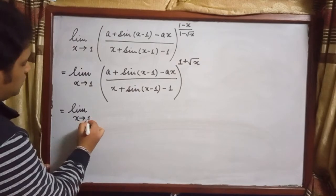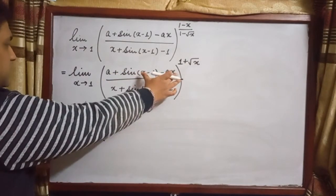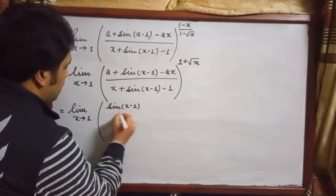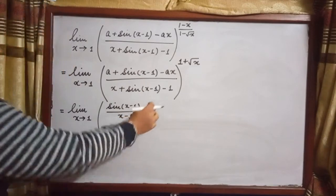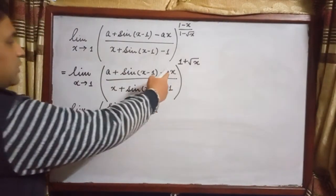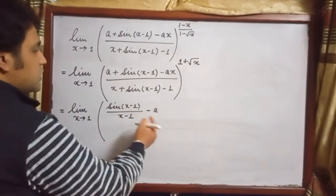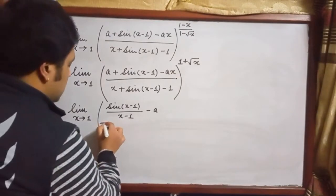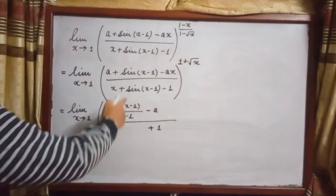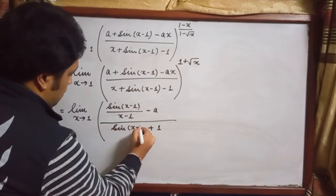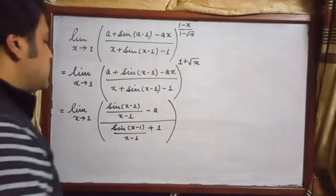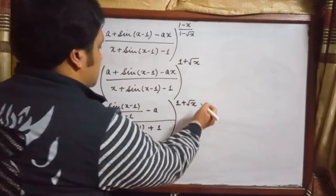Now let's make another simplification. As x tends to 1, let's divide the numerator and denominator by (x-1). We get sin(x-1)/(x-1) in the numerator area. Taking minus common gives (x-1)/(x-1) = 1, and again (x-1)/(x-1) = 1, so we have plus 1 and sin(x-1)/(x-1) as it is.